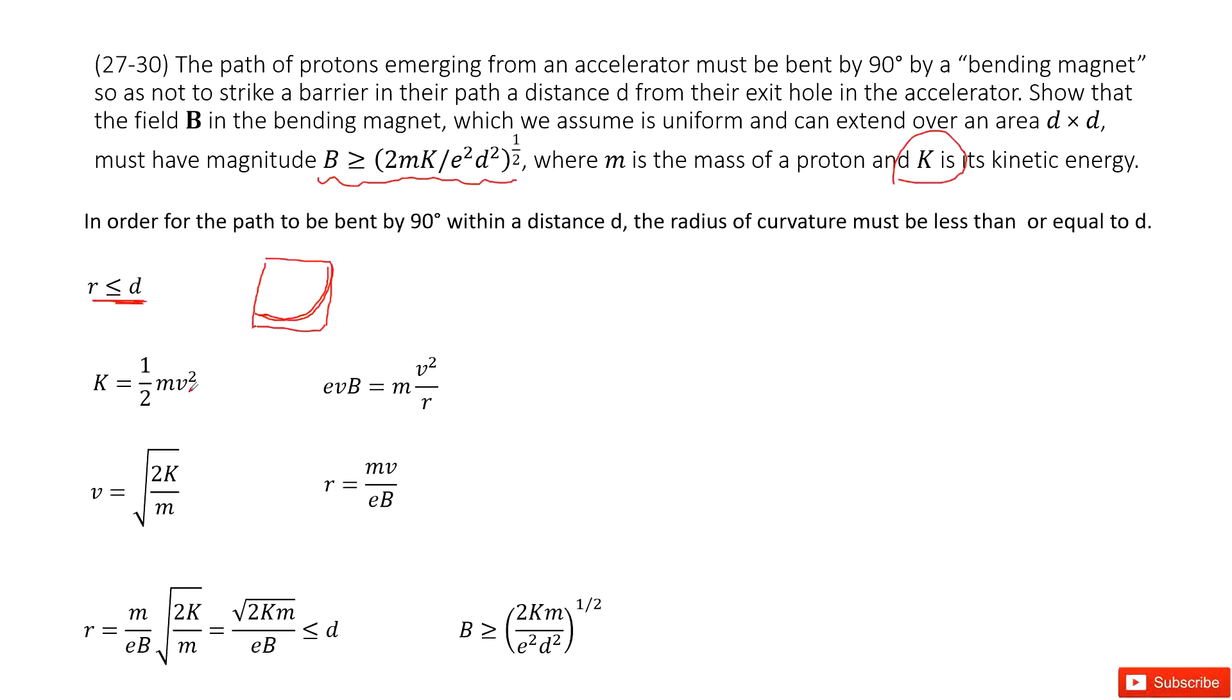And then this circular motion is a charged particle doing circular motion in a magnetic field. So we have Lorentz force as the centripetal force for circular motion. So evB equals mass times v² divided by r. Now from this, you can get the function for r as mv divided by eB.